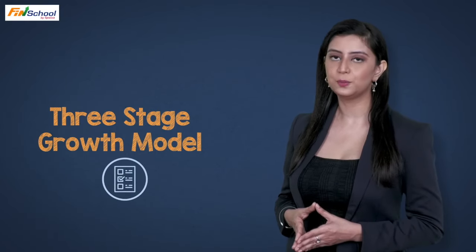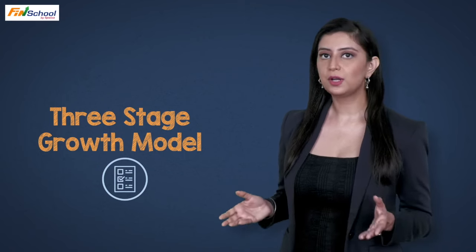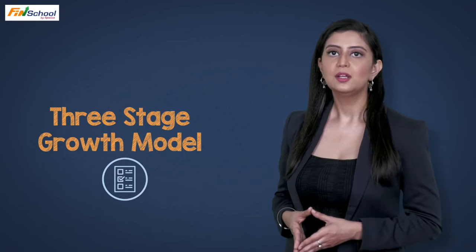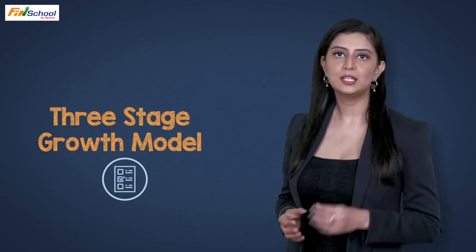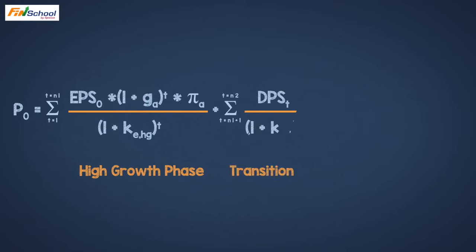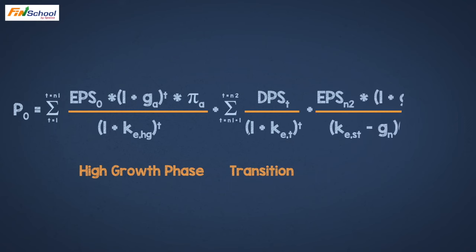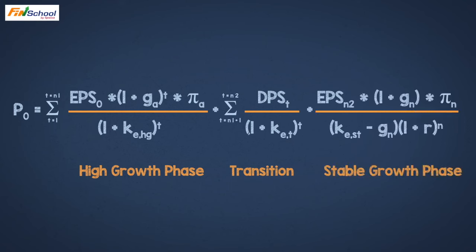The third model is called the Three-Stage Growth Model. As the name goes, just as the first model assumes a single growth rate and the second assumes two growth stages, the three-stage model assumes three stages of growth: an initial high growth phase, a transitional period where growth is still high, and a final stage of stable growth. Because this model allows three growth stages, it can be used for a wider set of companies. Practically, a company that launched a new product will initially see very high growth, then over time the growth rate will decline a little, and in the longer run it will stabilize as more competition kicks in and the firm's revenue base becomes larger.